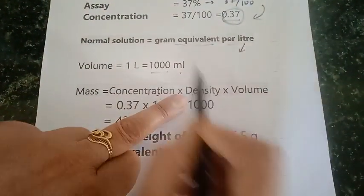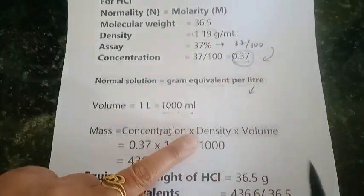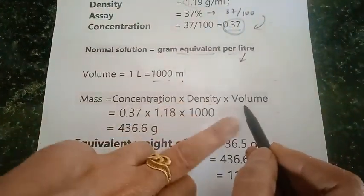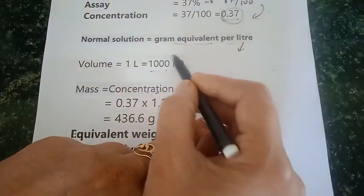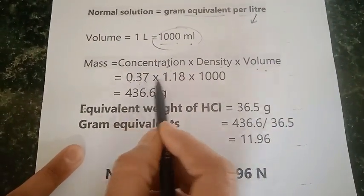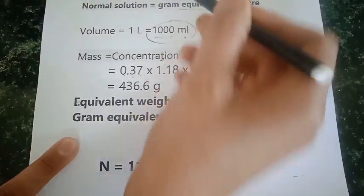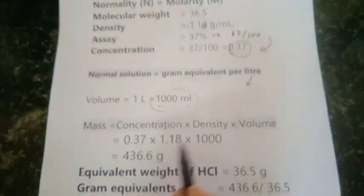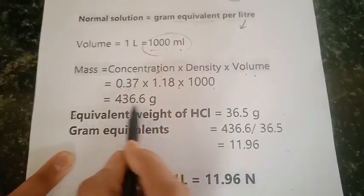So mass is equal to assay into density into volume which we have taken over here. So assay is 0.37 into its density which is 1.18 into the volume of the solution 1000 ml and we get this mass.